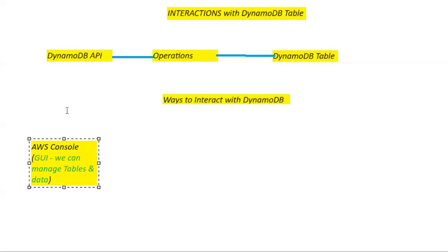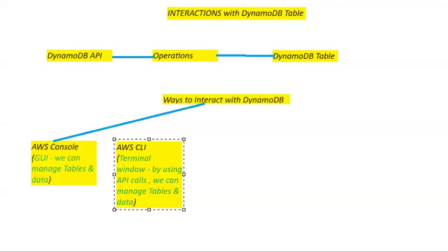One way to interact with DynamoDB is by using the AWS Console — a graphical user interface (GUI). Using that GUI, you can manage tables and table data: you can add, modify, delete, or update data, and you can create or delete tables from the console itself.